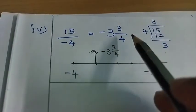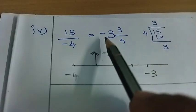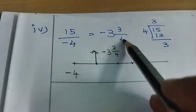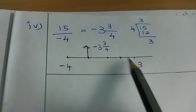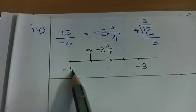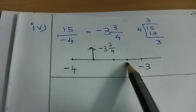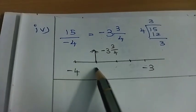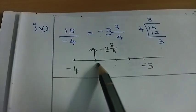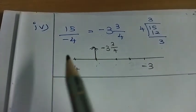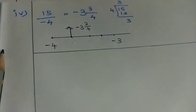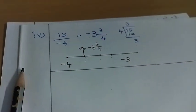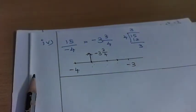Last question: 15 by minus 4. Dividing 15 by 4 gives 3 remainder 3, so minus 3 and 3 by 4. Marking on the number line between minus 3 and minus 4: minus 3 and 1 by 4, minus 3 and 2 by 4, minus 3 and 3 by 4, divided into 4 equal parts.